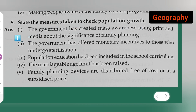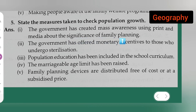Now there are five steps given. The first step: the government has created mass awareness using print and media about the significance of family planning. This is the first measure taken to check population growth.